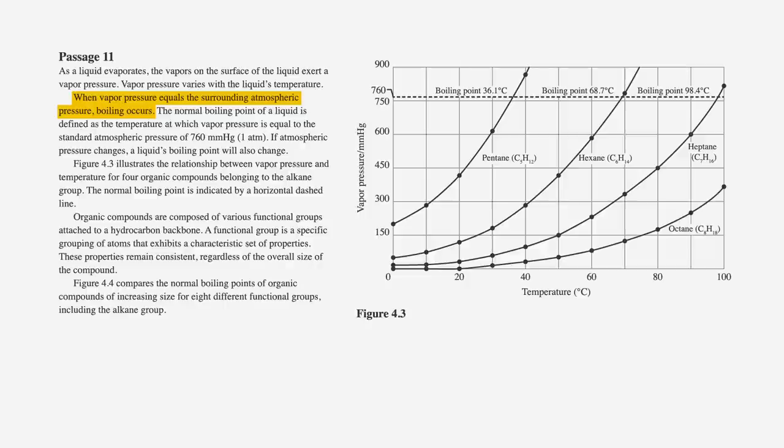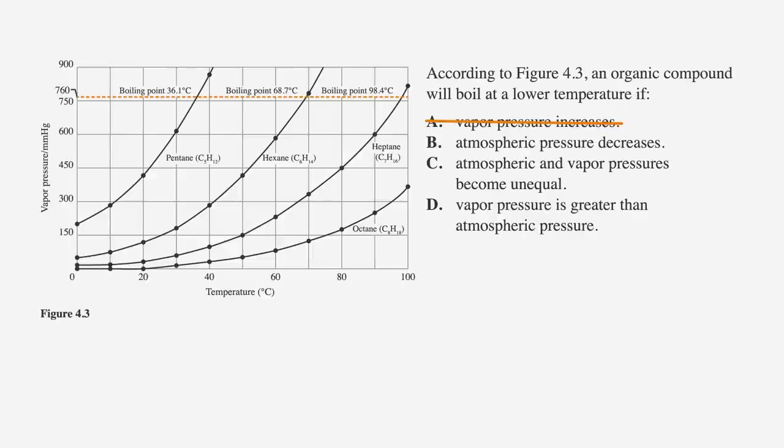Here's a sentence that might help: when vapor pressure equals the surrounding atmospheric pressure, boiling occurs. Boiling point is our dashed line, so the boiling point must be the same as atmospheric pressure. We determined that if the pressure decreases, the boiling point decreases, so atmospheric pressure must also decrease. The answer is clearly B.